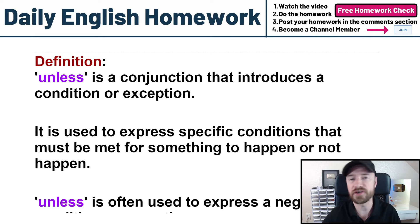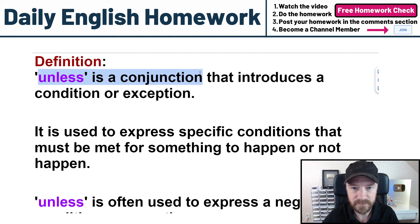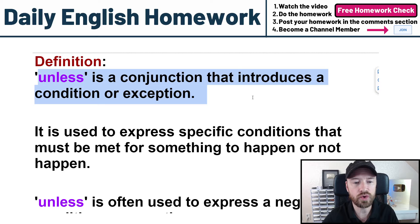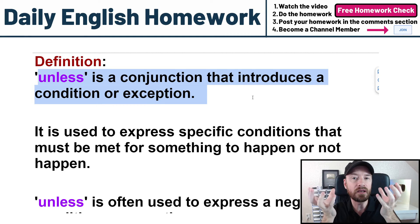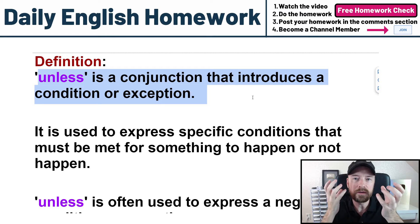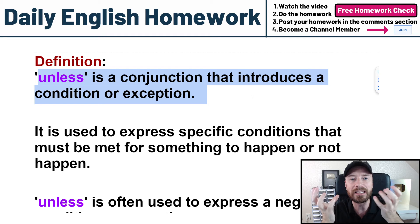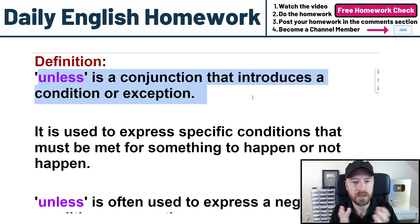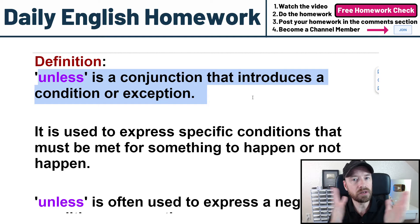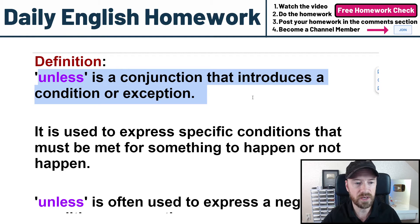UNLESS — the definition. What is the meaning? UNLESS is a conjunction that introduces a condition or exception. Conjunction words are like AND and BUT — they connect two clauses of a sentence. A clause is a piece of information or idea, and the role of a conjunction is to connect two of them in one sentence. UNLESS introduces a condition or an exception.